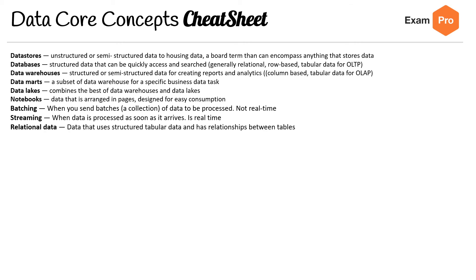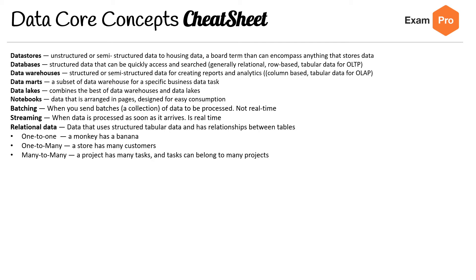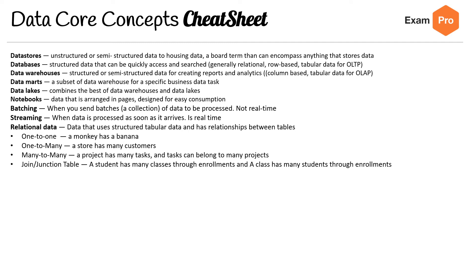Relational data uses structured tabular data with relationships between tables. Relationship types include: one-to-one (a monkey has a banana), one-to-many (a store has many customers), many-to-many (a project has many tasks, and tasks can belong to many projects), and join tables — for example, a student has many classes through enrollments, where enrollments is the join table and a class has many students through enrollments.